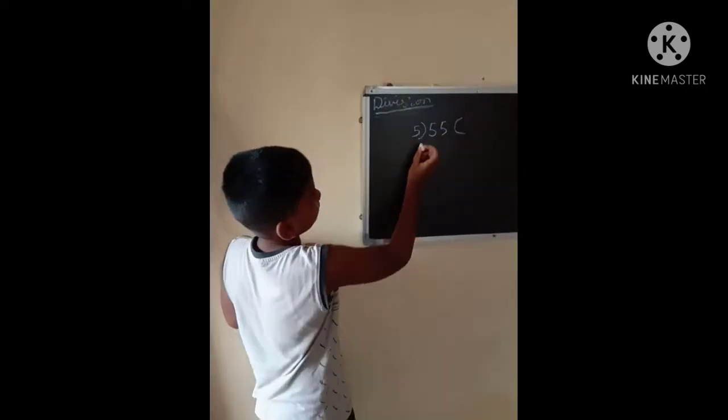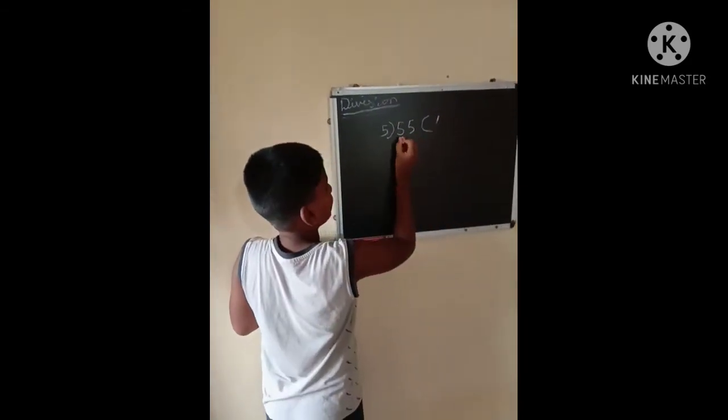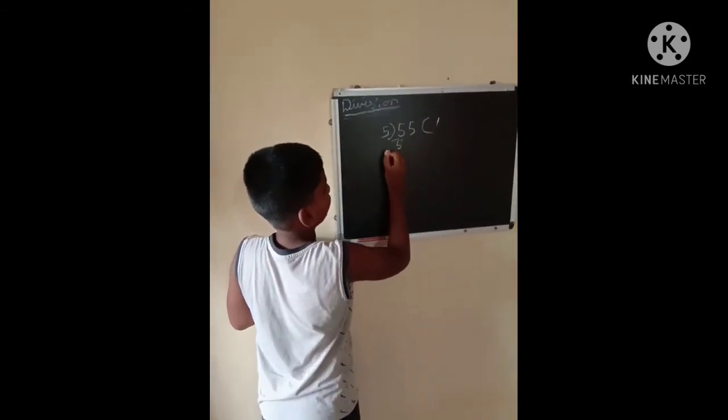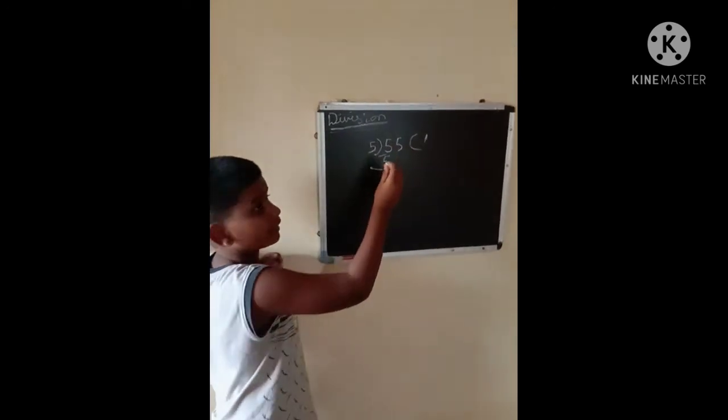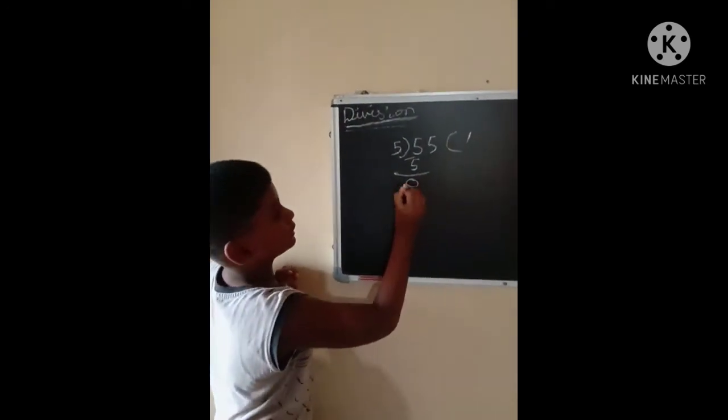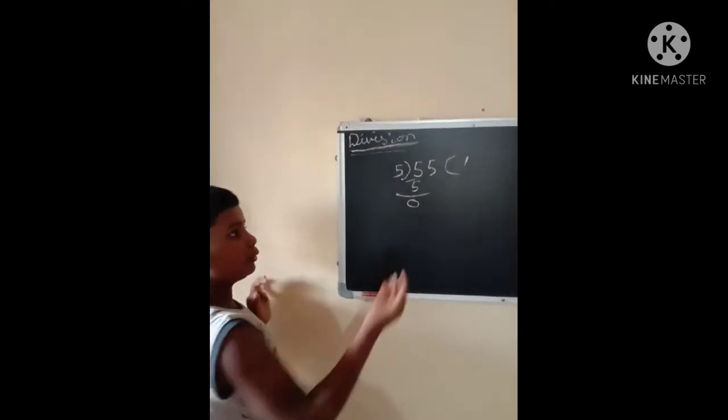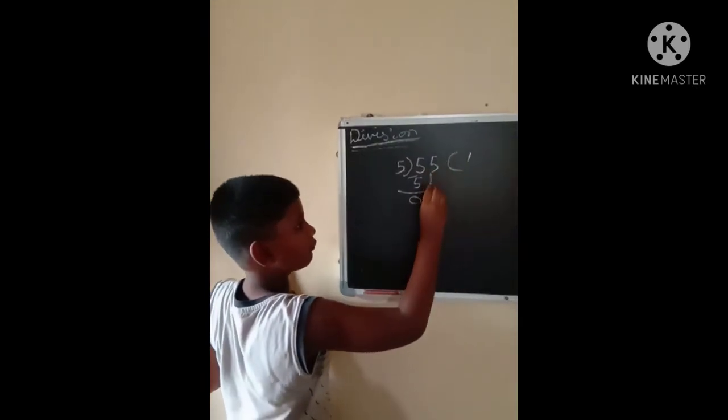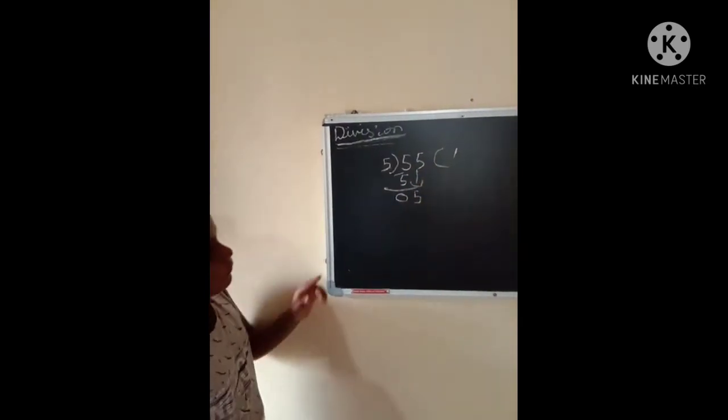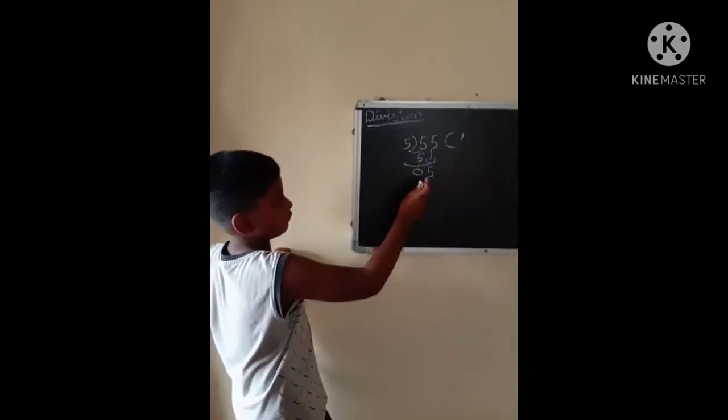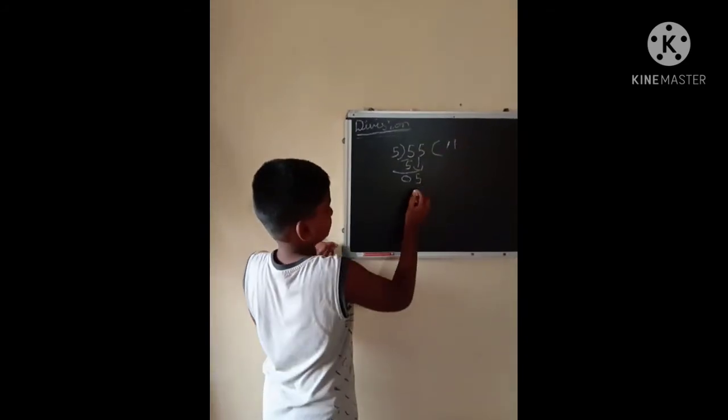Five ones are five. Five minus five is equal to zero. And next we should bring down five here. And here also in five table, five ones are five minus five equal to zero.